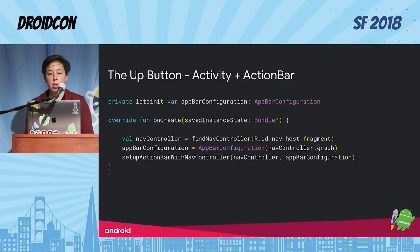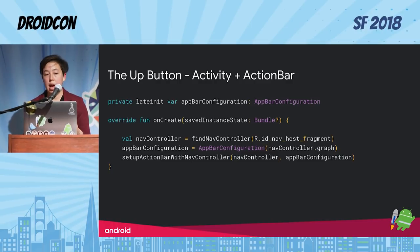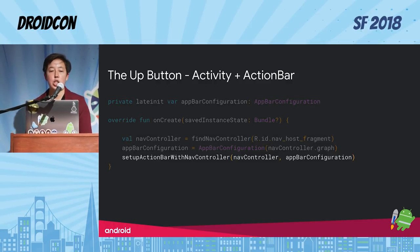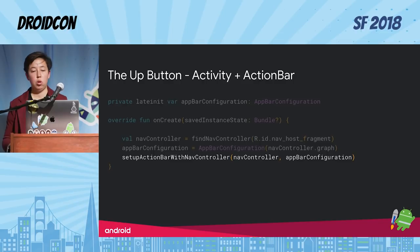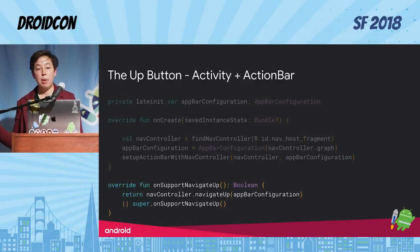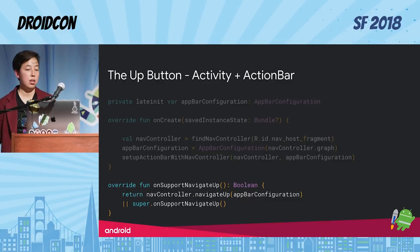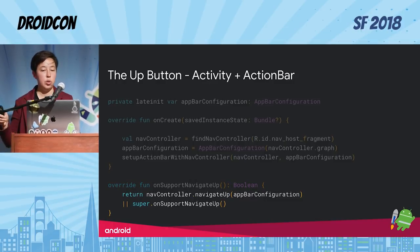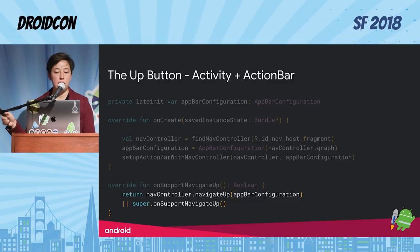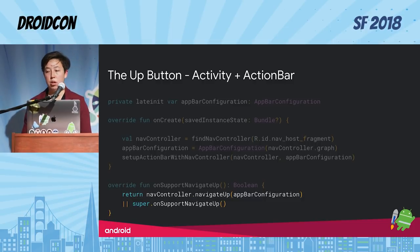Once you have your AppBarConfiguration, you can configure the up button either with a fragment-and-toolbar combo or an activity-and-action-bar combo. Get access to your toolbar and call setupWithNavController, passing in the nav controller and importantly the AppBarConfiguration. For the action bar approach it looks pretty similar — call setupActionBarWithNavController passing in the nav controller and AppBarConfiguration. Keep in mind that if you're doing this with an activity, you also have to override onSupportNavigateUp and use navController.navigateUp, again passing in that AppBarConfiguration.